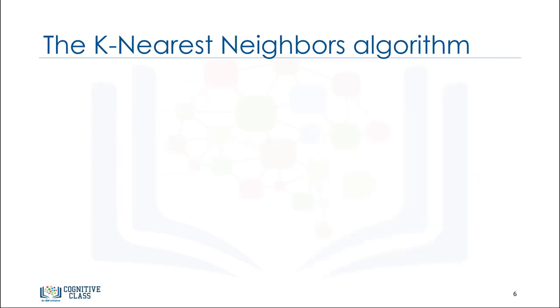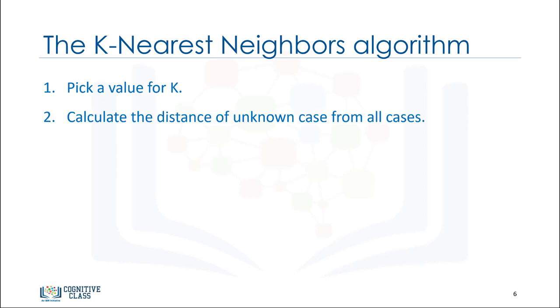In a classification problem, the k-nearest neighbors algorithm works as follows. 1. Pick a value for k. 2. Calculate the distance from the new case, held out, from each of the cases in the dataset.